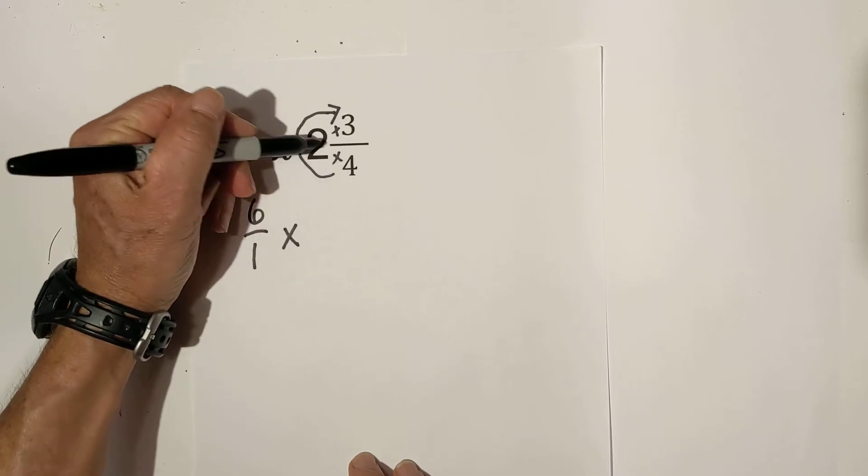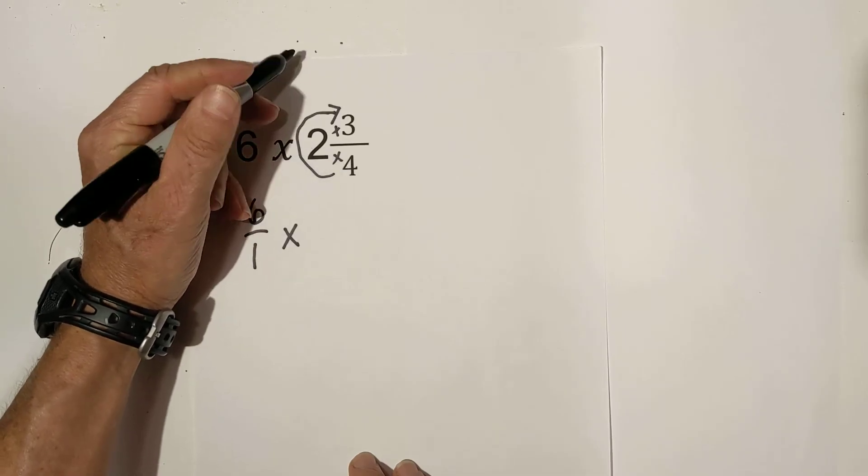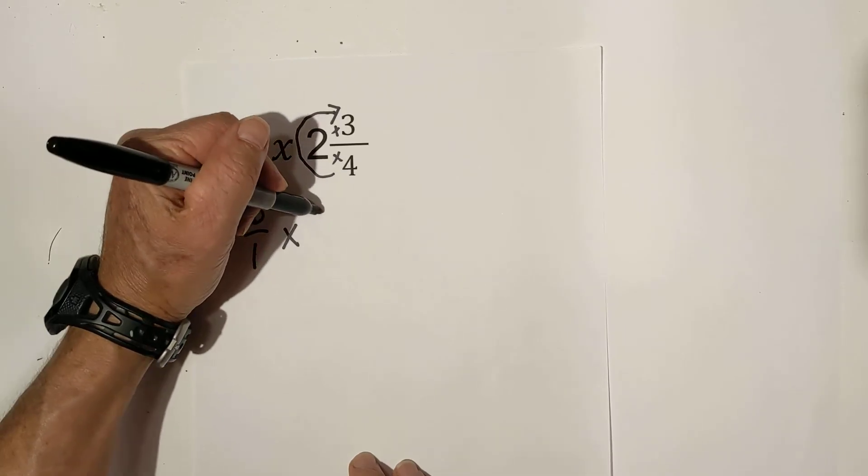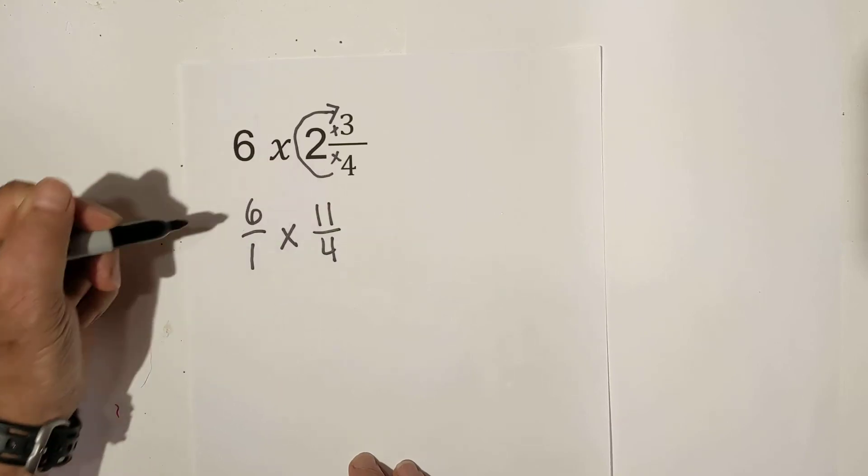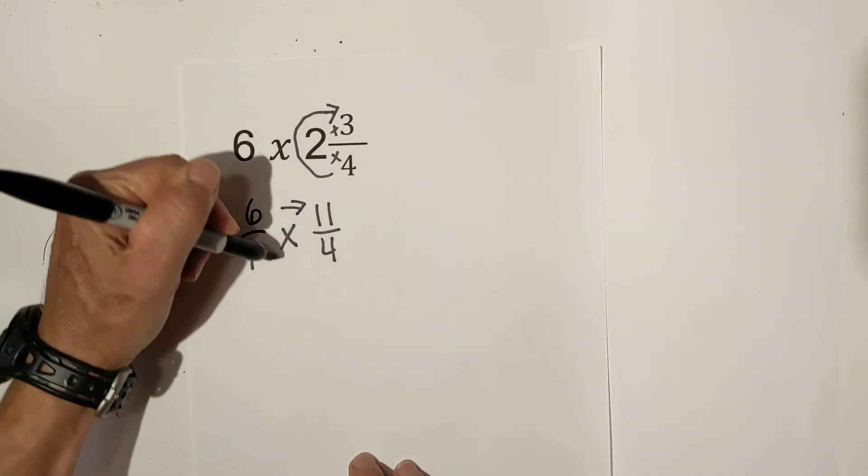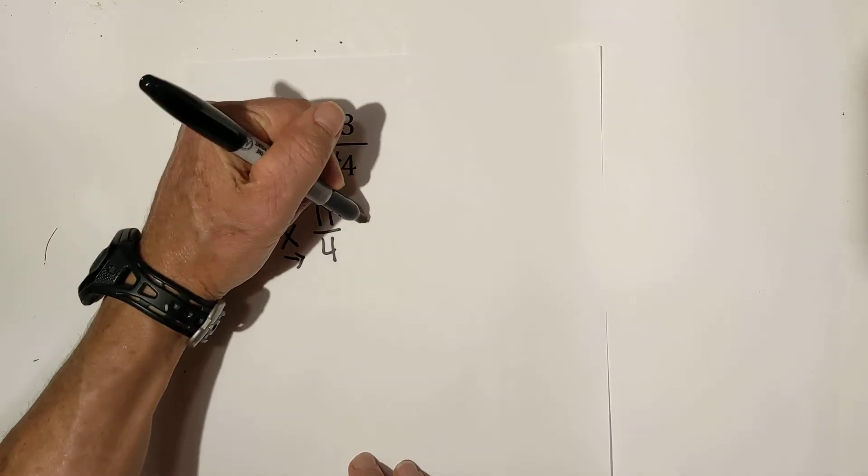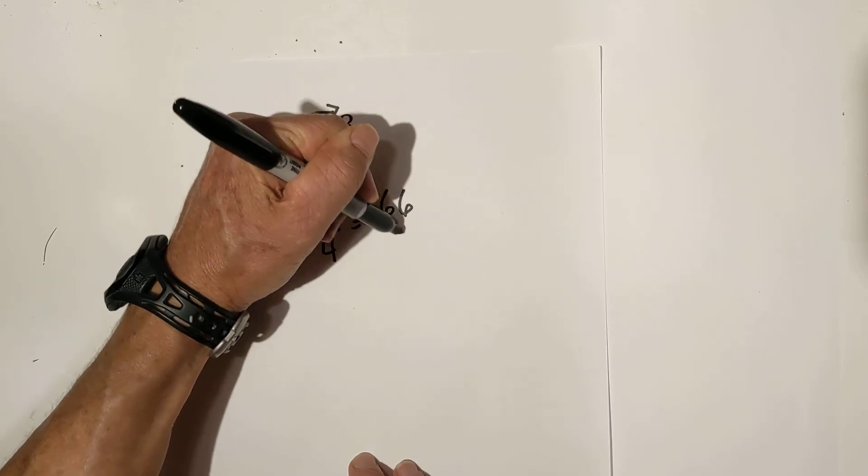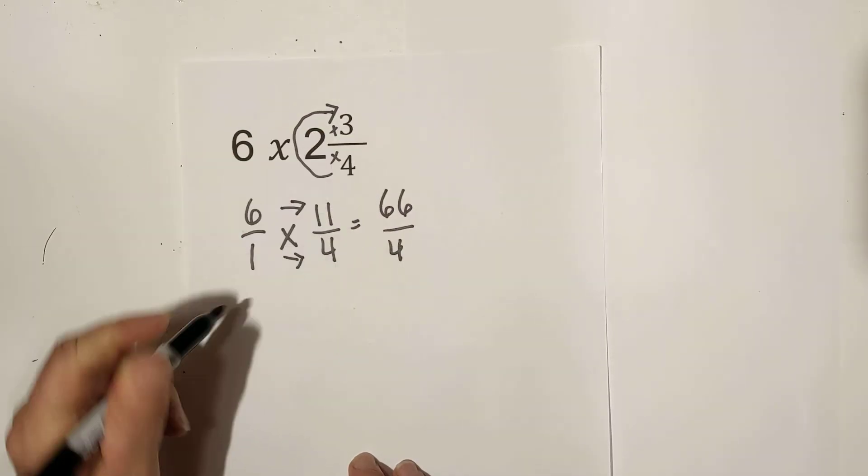We multiply and add. 4 times 2 is 8 plus 3 is 11 over 4. Now we multiply it straight across. 6 times 11 is 66. 4 times 1 is 4.